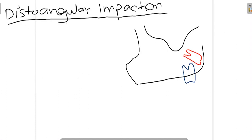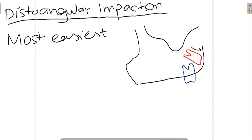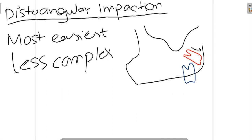Talking about distoangular impaction of the maxillary third molar — in this case the crown of the maxillary third molar is moved in a distal direction. When it is angled distally as compared to the second molar, it is known as distoangular impaction. Importantly, this is the reverse of the mandible: in mandibular impaction distoangular was the most difficult, but for maxillary third molar it is the easiest to extract and least complex.